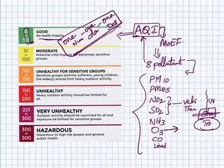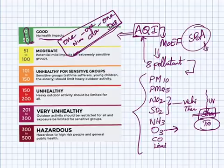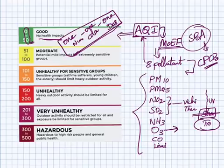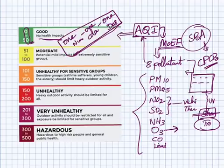Under the Ministry of Environment and Forests, the Air Quality Index was released as part of Swachh Bharat Abhiyan. It is published on the Central Pollution Control Board website, where daily and real-time updates are given. Screens are installed in all major cities to display air quality levels at that particular place.